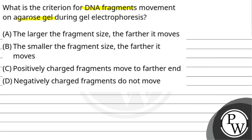Option A: the larger the fragment size, the farther it moves. Option B: the smaller the fragment size, the farther it moves. Option C: positively charged fragments move to farther end, and Option D: negatively charged fragments do not move.